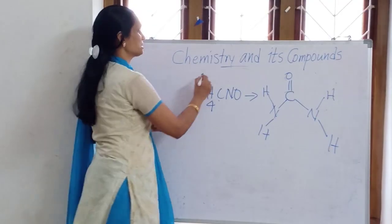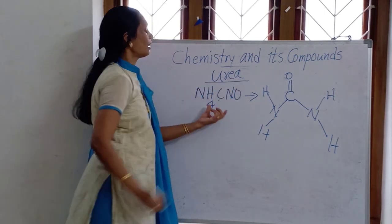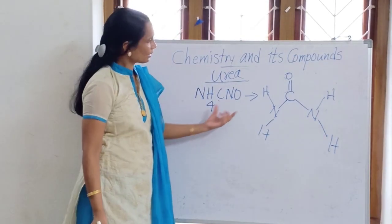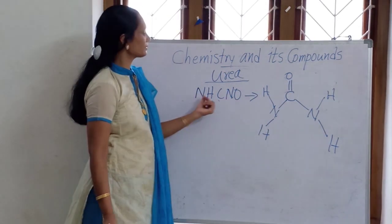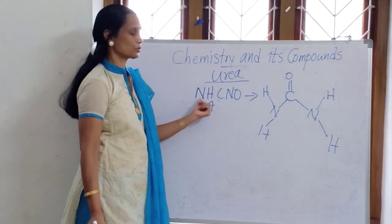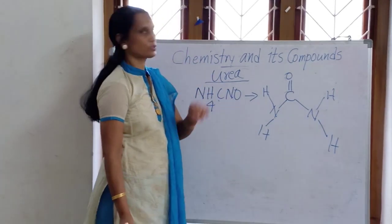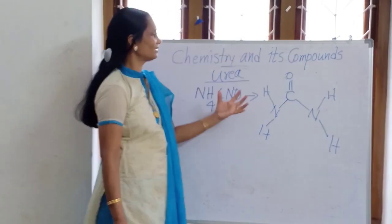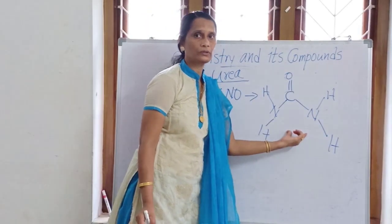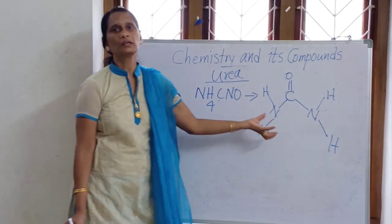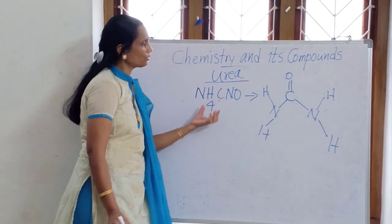Urea is the first organic compound made from ammonium cyanate. Both have the same molecular formula — CH4N2O, with 2 nitrogen atoms, 4 hydrogen atoms, carbon, and oxygen — but these two are entirely different. Ammonium cyanate is an inorganic compound, while urea is an organic compound. This was the first organic compound made from an inorganic compound by Frederick Wöhler.